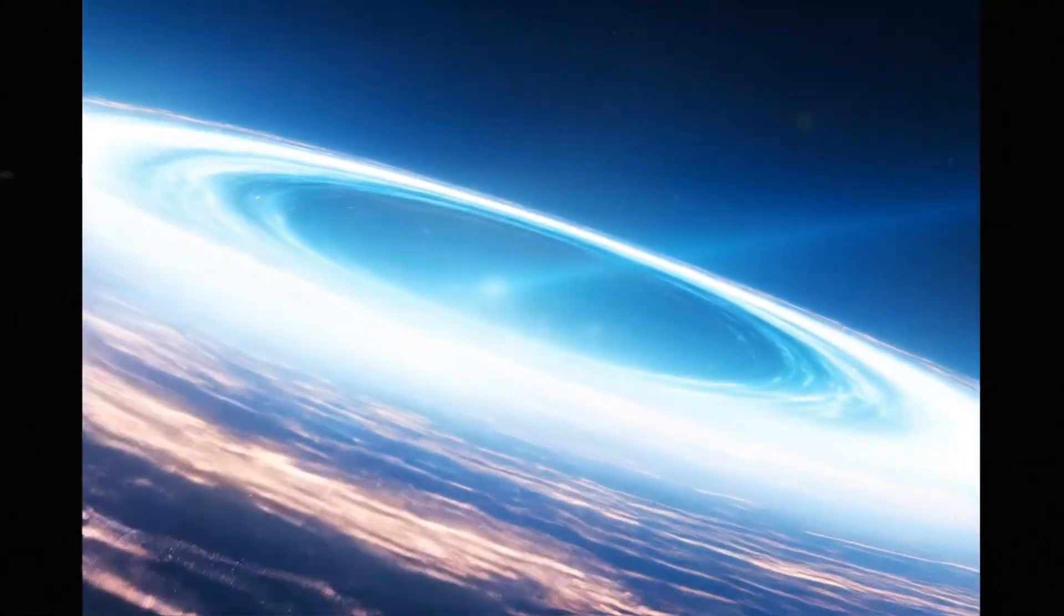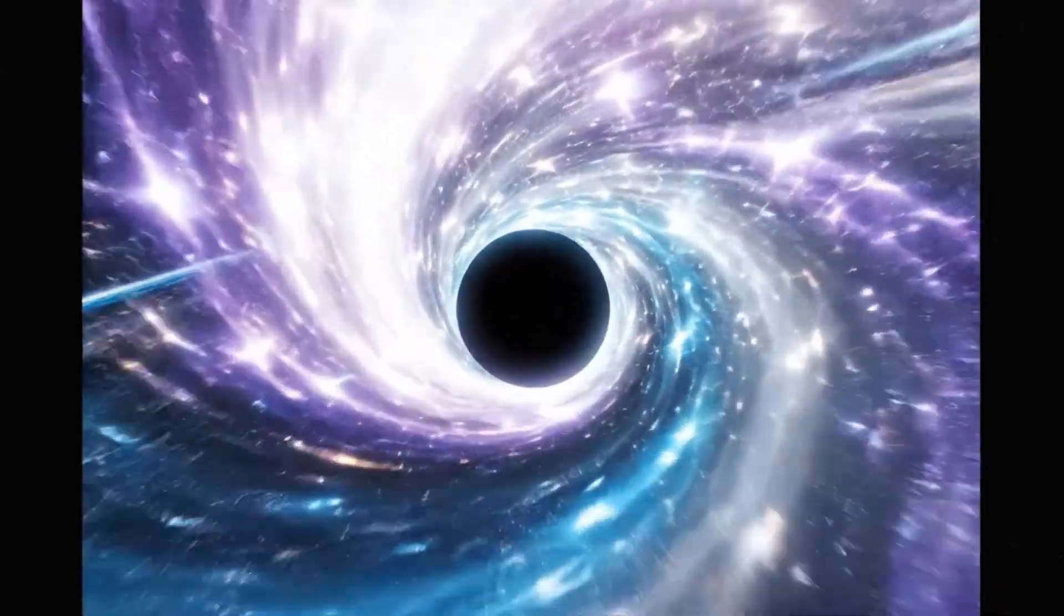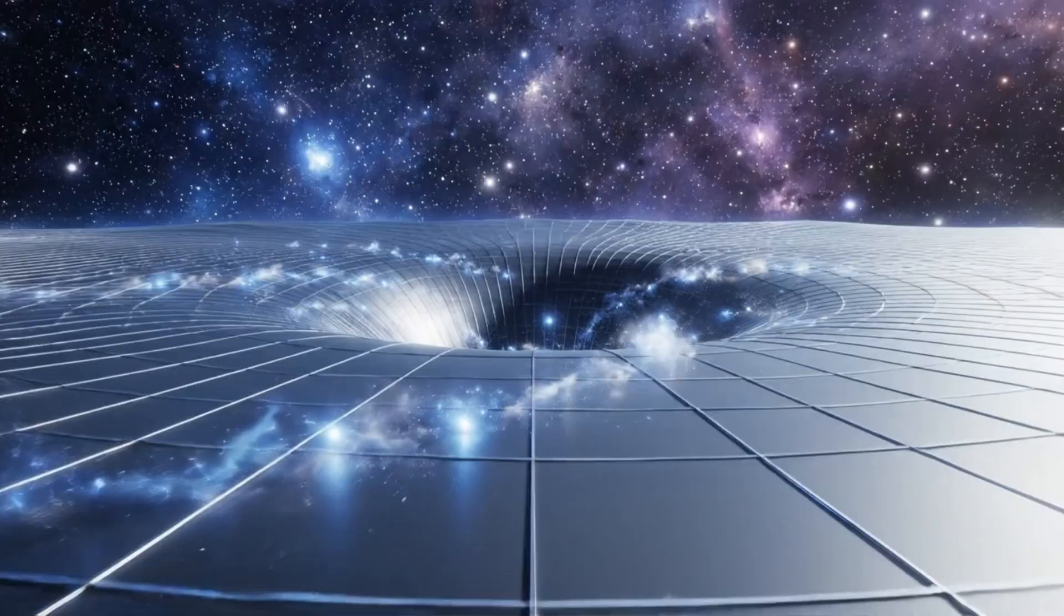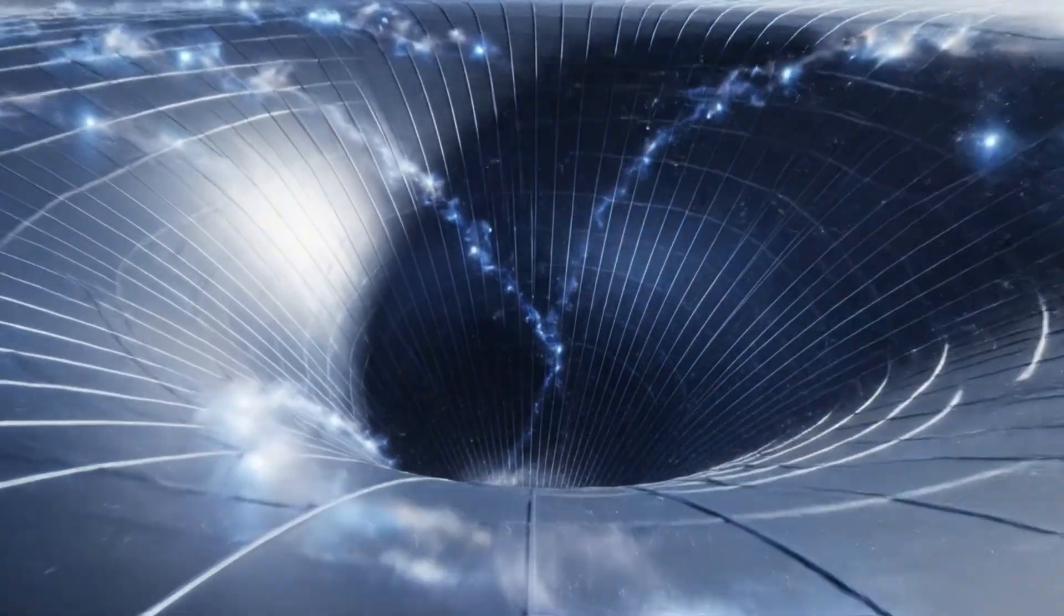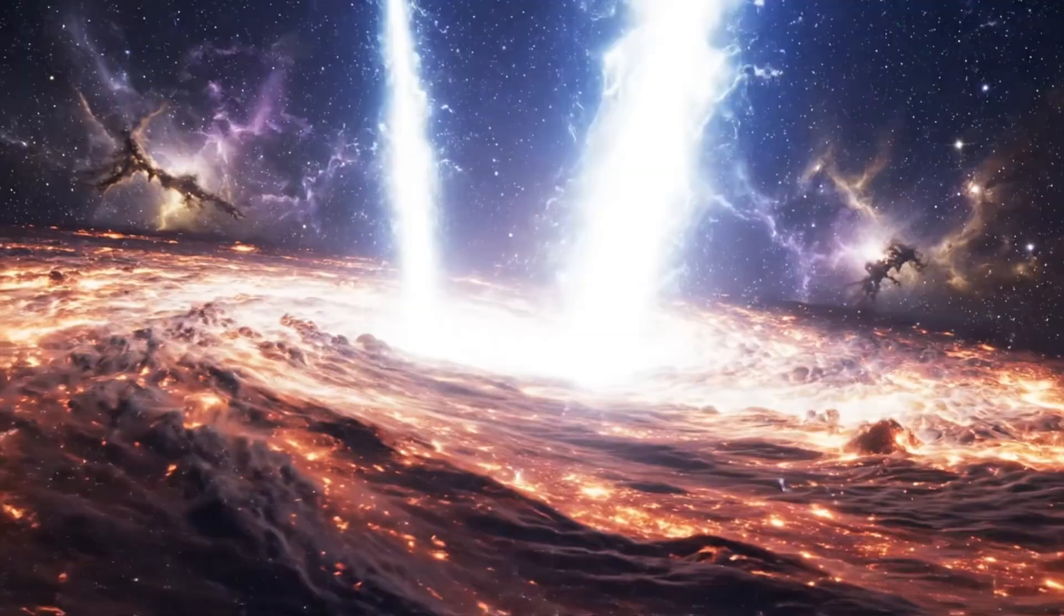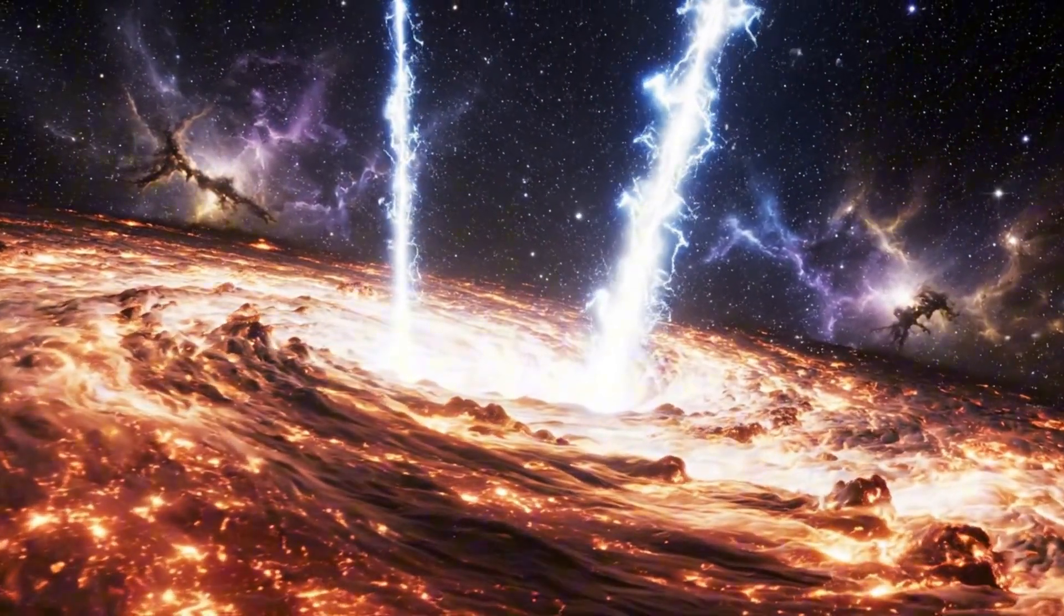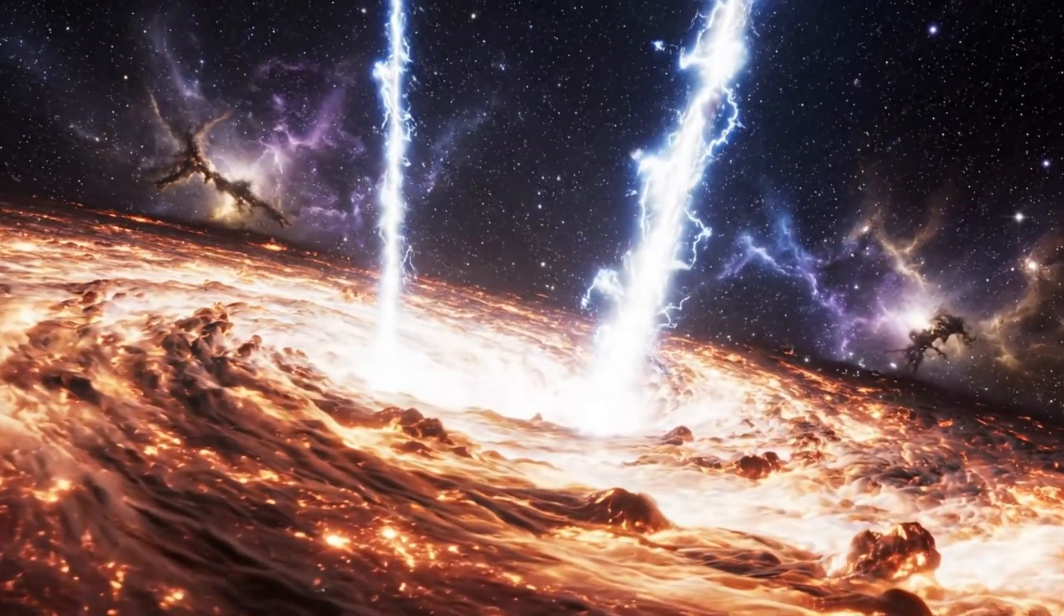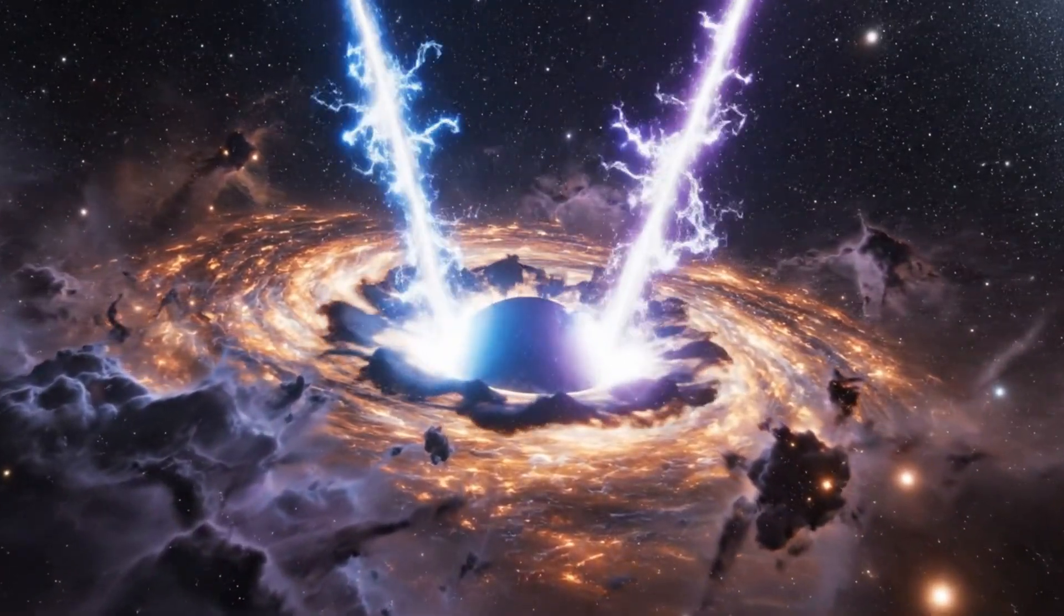There are objects in our universe so enormous that even our imagination struggles to stand beside them. Places where gravity twists the fabric of reality and where light itself seems to vanish the moment it is born. TON 618 lives inside that realm. It does not shine like a star and it does not grow like a galaxy. It exists as a contradiction that forces the universe to speak a different language.